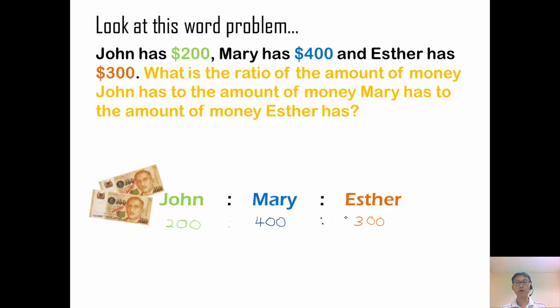Now obviously we're not going to leave the answers like that because you know that we should always make it in simplest form. So I can actually divide this, divide by 100. So what I'm doing is I'm actually cancelling the two zeros. Same thing, I divide by 100. And finally I divide by 100 here. So this becomes 2 is to 4 is to 3. So the ratio of the amount of money that John has to the amount of money that Mary has to the amount of money that Esther has, 2 is to 4 is to 3.